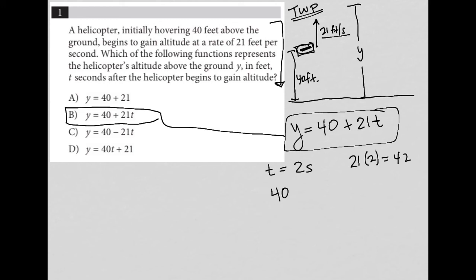Which means this is going to be 42. So we expect the helicopter to be at 82 feet at two seconds. And we can go back to the answer choices and say, which one of these choices, if I plug in T equals 2, will I get out that Y equals 82? And you'll find that choice B gets you there.